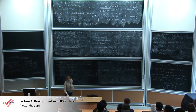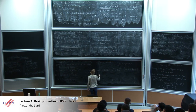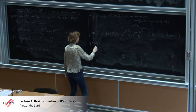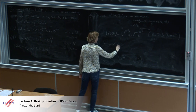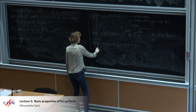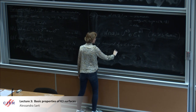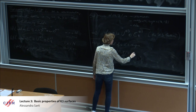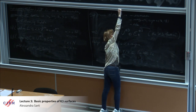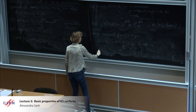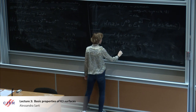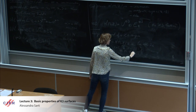To finish this section, let me recall the Hodge diamond. We know all the Hodge numbers. H2(S,C), which equals H2(S,Z) tensor C, has rank 22. By the Hodge decomposition, H2(S,C) decomposes as H^{2,0} plus H^{1,1} plus H^{0,2}.